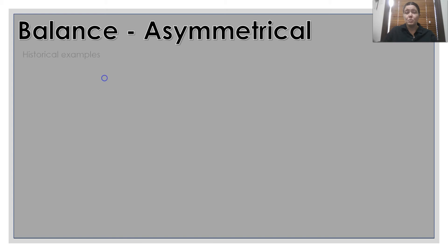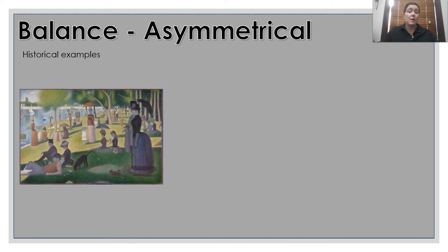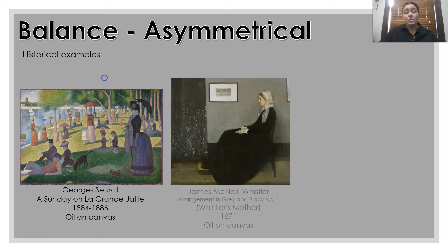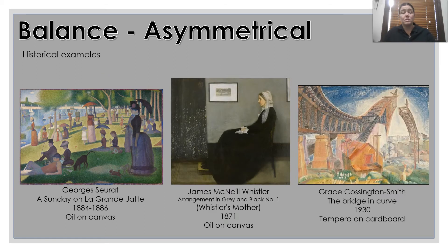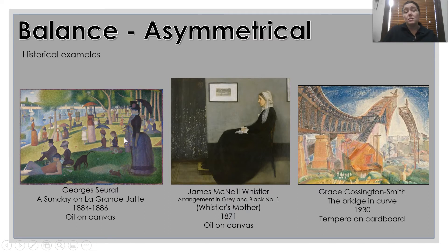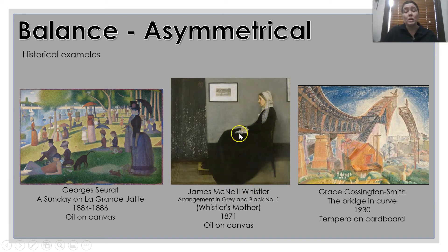Some historical examples of asymmetrical balance: we've got Seurat, we've got Whistler, we've got Cossington-Smith. You can see that for Seurat, the balance is off centre by the use of the colour and the shapes of the people. Whistler's Mother is also heavier on one side. You can see with Cossington-Smith the left side is heavier than the right.